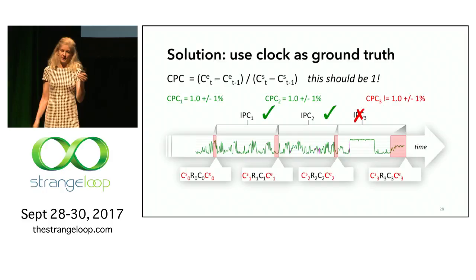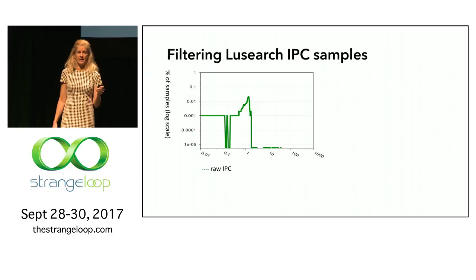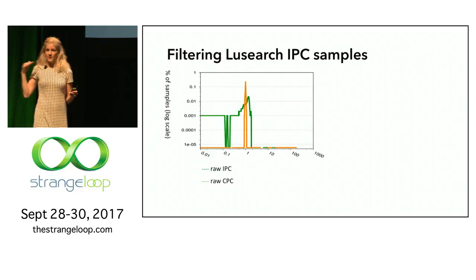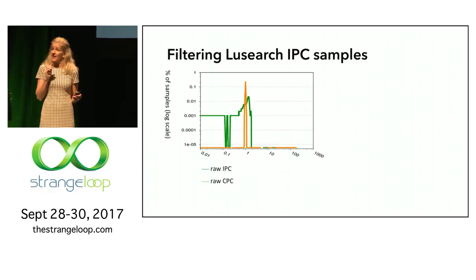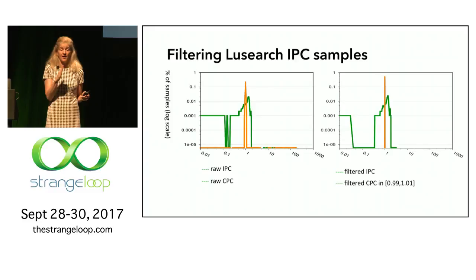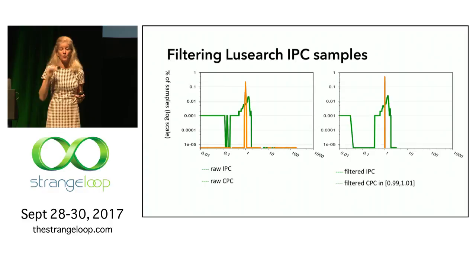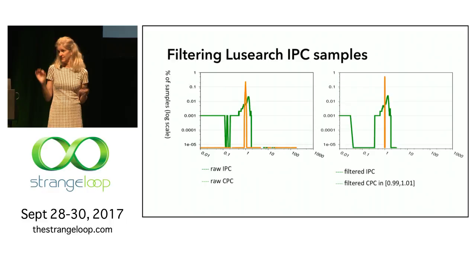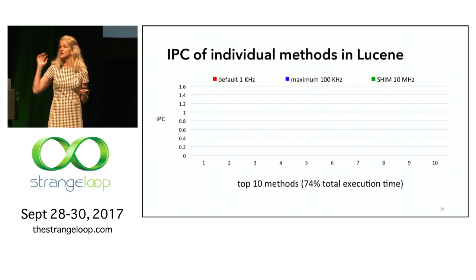We simply get rid of bad samples. Going back to our problematic trace, the yellow bar shows cycles per cycle, and you can see it corresponded to a lot of the noise. When we filter to keep only samples where cycles per cycle is within 1% of 1, we get rid of all the clearly wrong data — you can't issue more than four instructions at once — and also some that were too short. It's not perfect, but it's much closer to ground truth.